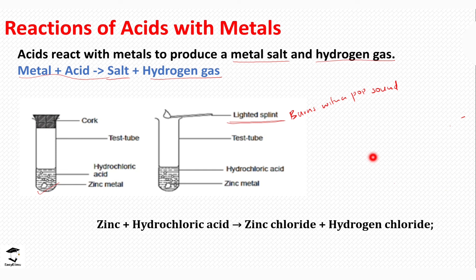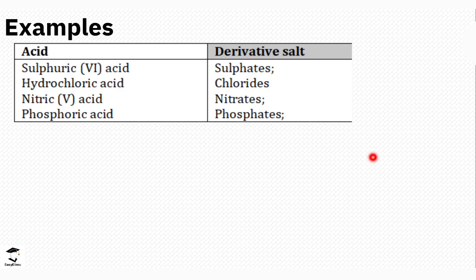The equation: zinc reacts with hydrochloric acid to form zinc chloride and hydrogen gas. The salt formed is always a derivative of the acid used. Sulfuric acid produces sulfates, hydrochloric acid produces chlorides, nitric acid produces nitrates, phosphoric acid produces phosphates. The same pattern of derivative salts appears in all acid reactions, not just reactions with metals.